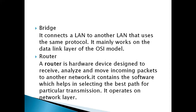A bridge connects a LAN to another LAN locally — one local area network connects to another local area network that uses the same protocol. With the help of a bridge, we connect two LANs, and it mainly works on the data link layer of the OSI model.